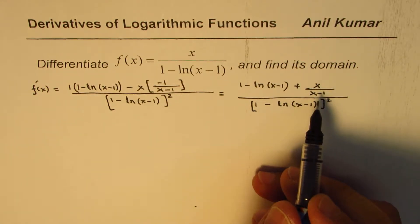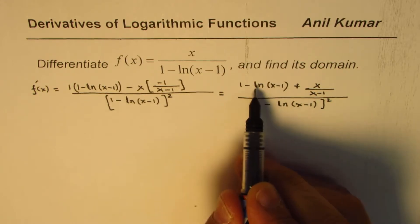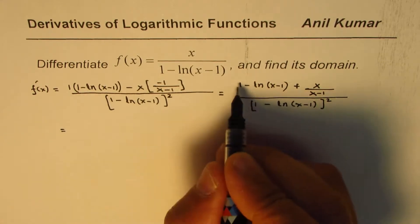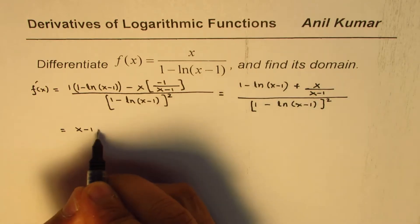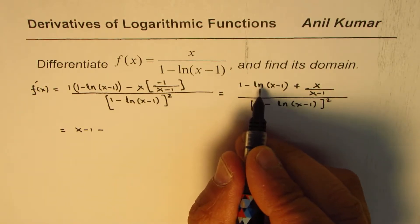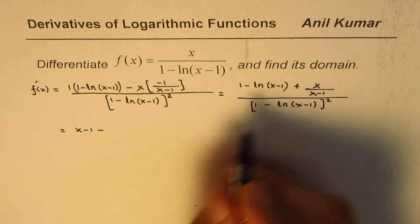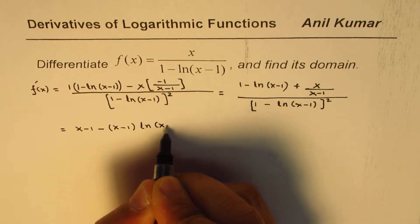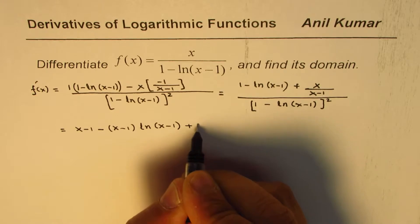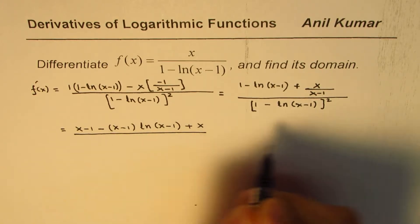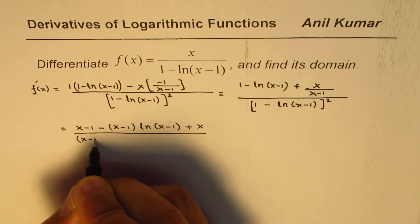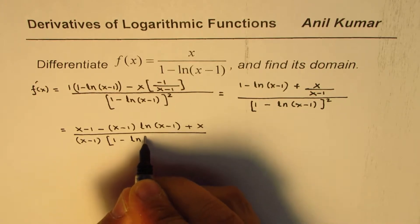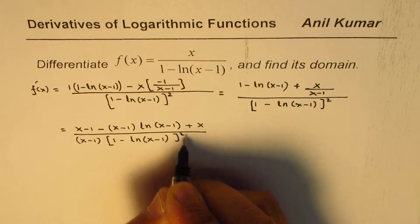Now we could simplify this by taking the common denominator, multiplying this term by (x minus 1). So we get this derivative as equal to: (x minus 1) times (1 minus ln(x minus 1)), minus (x minus 1) times all this — so we get (x minus 1) times ln(x minus 1) plus x.